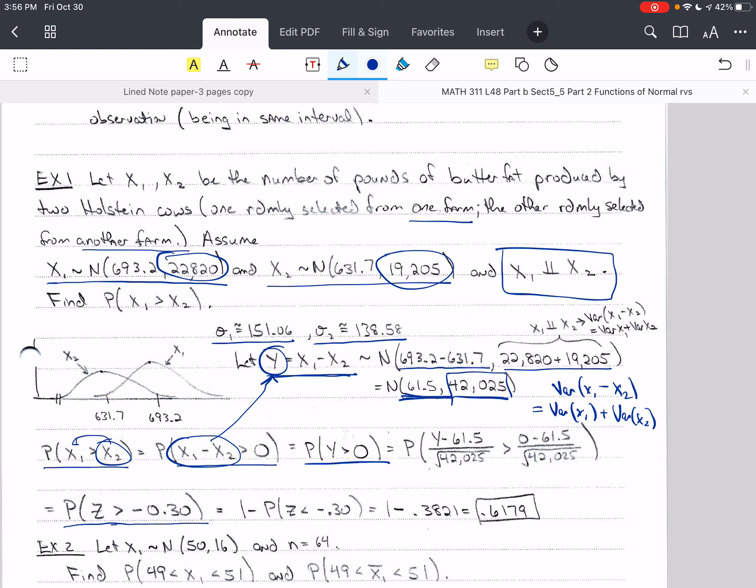And this leaves us with the probability that z is greater than negative 0.3. And we can actually look up Φ of negative 0.30 from table 5b, or you could do this subtraction here. But our table would give us directly 0.6179. So that's the probability that x₁ is greater than x₂.